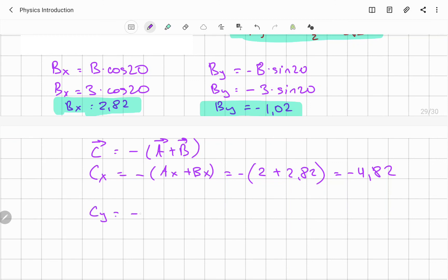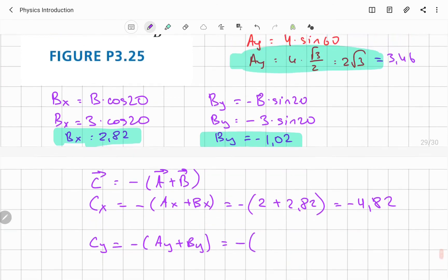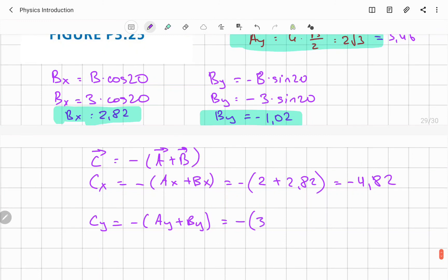Same for y component. Negative Ay plus By. Basically Ay is 3.46 positive plus By is negative. So the answer will be final, 3.46 minus 1.02, negative 2.44.